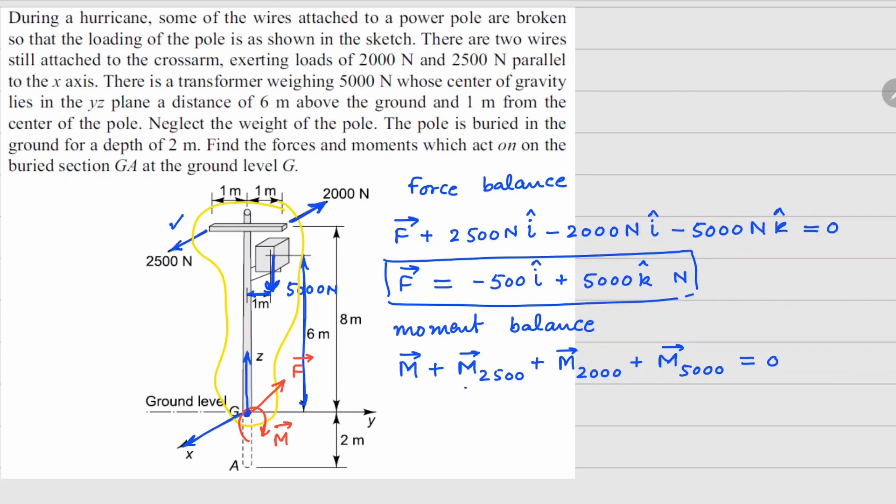So for all of these individual movements, it's better for us to write in terms of vectors. So in general for a movement, we always do r cross f. So if let's say for 2500 newton, if you are doing movement about point G,